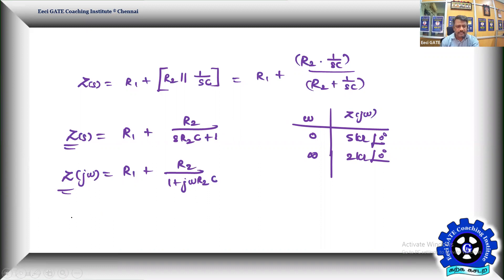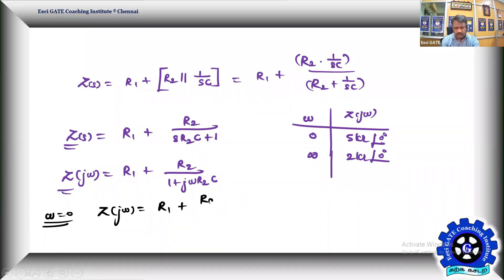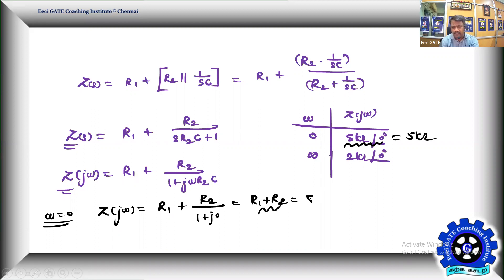Let omega equal to zero. The impedance Z(jω) becomes R1 + R2 divided by (1 + j·0), which is simply R1 + R2. That is given as 5 kΩ, which is purely real. So R1 + R2 = 5 kΩ.